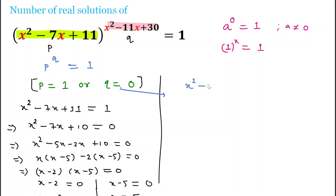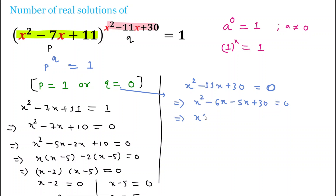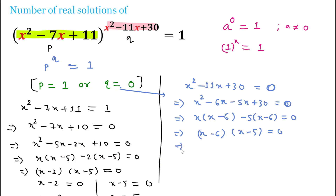Solving Case 2 where q = 0: x² - 11x + 30 = 0. We can factor this as x² - 6x - 5x + 30 = 0. Taking x common from the first two terms gives x(x - 6), and taking -5 common from the last two terms gives -5(x - 6) = 0. So x - 6 = 0 and x - 5 = 0, giving x = 6 and x = 5.